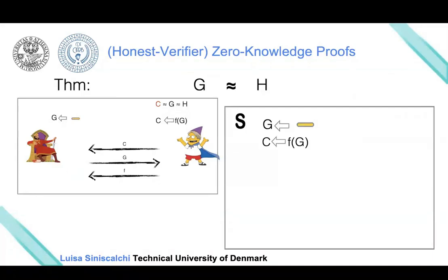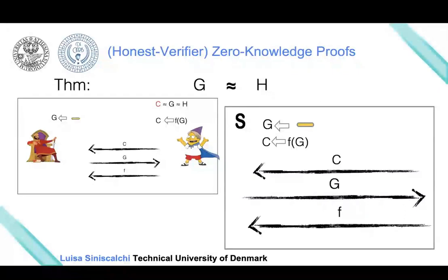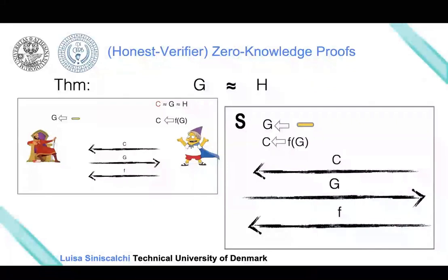At this point, the simulator is able to produce a transcript that is exactly distributed like the transcript generated between the prover and the verifier. Note that in this case the simulator does not know the permutation. So this transcript generated by the simulator carries no information about the permutation, but it is also distributed just like a transcript generated between the prover and the verifier. It carries no knowledge—it doesn't transfer any knowledge about the permutation.